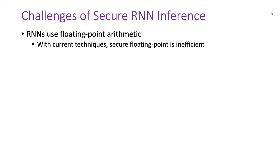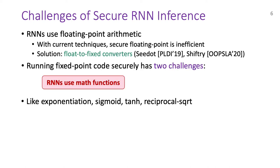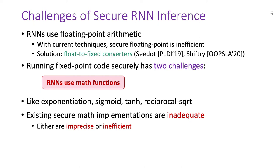Now, let's see what are the challenges in performing secure RNN inference. First, RNNs use floating-point arithmetic, which is inefficient to implement securely using existing techniques. Fortunately, we have automated float-to-fix converters for this problem, which convert floating-point code to fixed-point code that is much more tractable. However, we still have two major challenges in running the fixed-point code securely. The first challenge is that RNNs use math functions like exponentiation, sigmoid, tanh, and reciprocal of square root.